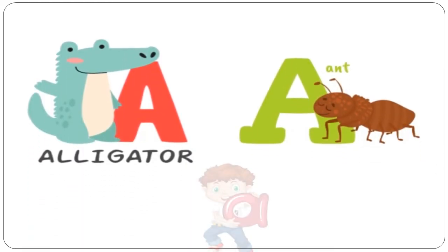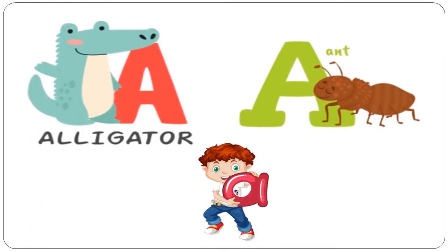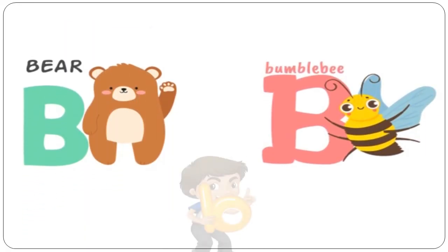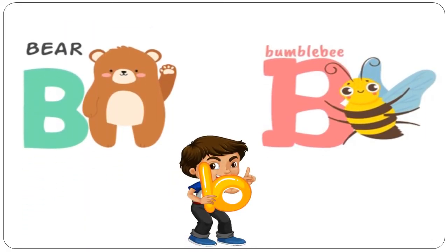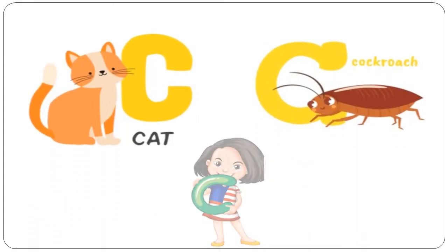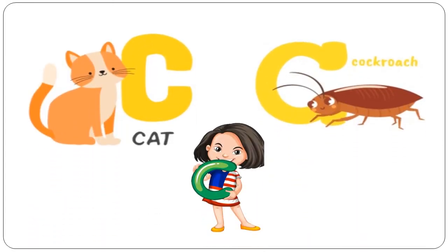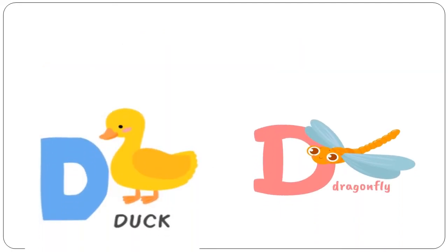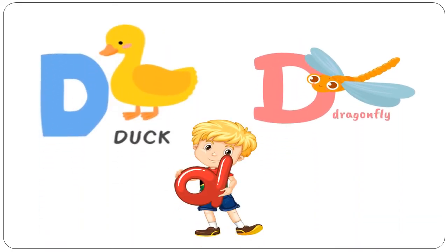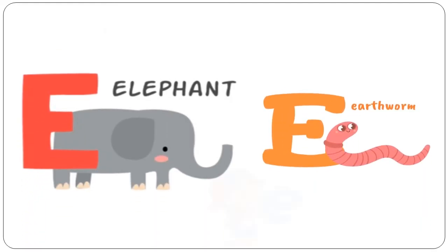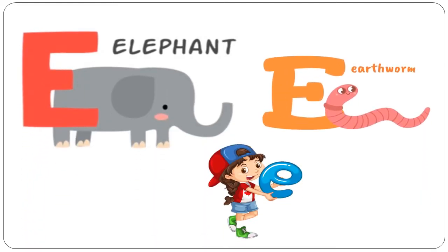A is for Alligator. A is for Ant. B is for Bear. B is for Bumblebee. C is for Cat. C is for Cockroach. D is for Duck. D is for Dragonfly. E is for Elephant. E is for Earthworm.